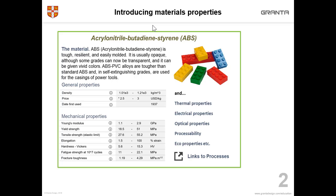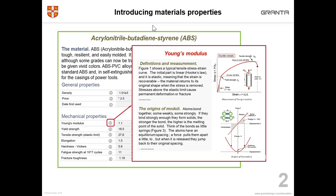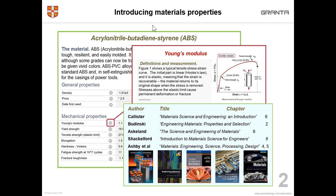Here is an idealised version of the records. You can see that there is a description and an image and then some general properties which are stored as a range of values. There are mechanical, thermal, electrical, optical, processability and eco properties. For each of the properties, you can click on the eye icon to find more information in the science notes, where you'll find a definition of the property, how it's measured and information about the origins of the property. Scrolling down to the bottom of the science note, you'll find references to books where students can find more information.